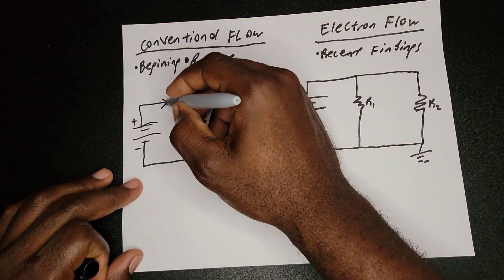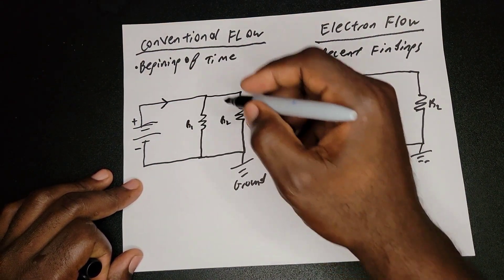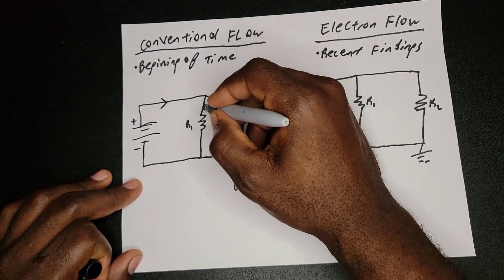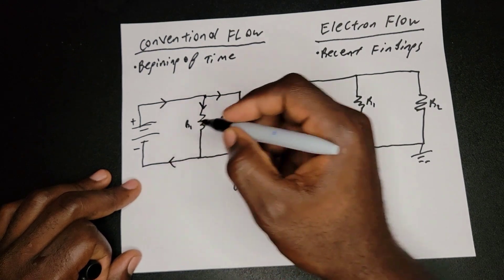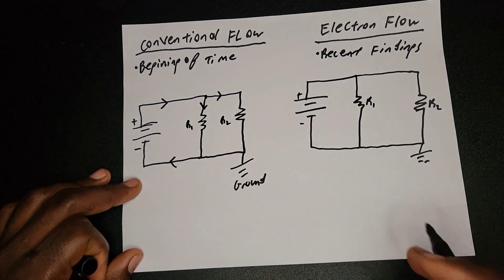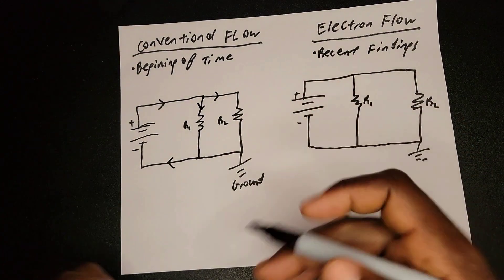Meaning the current is going to flow this way in the direction of the arrow. So it will also flow this way, it will also flow this way when you split at this node, and then it comes back to this point and goes to the negative.